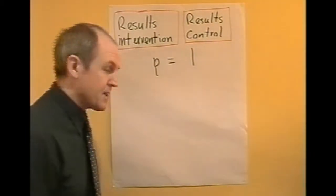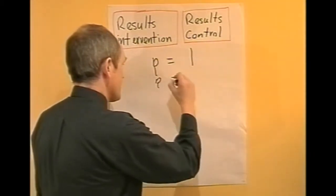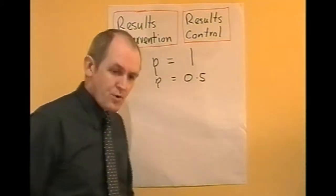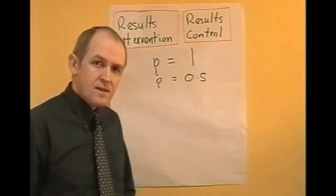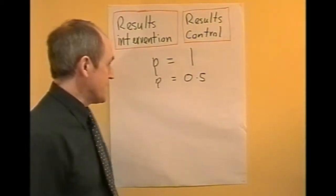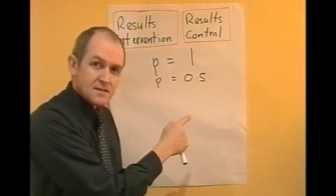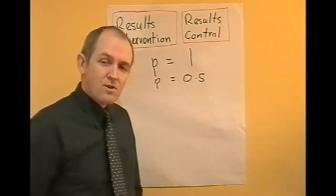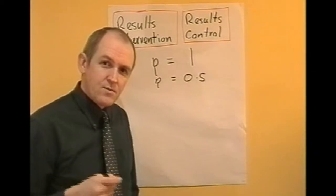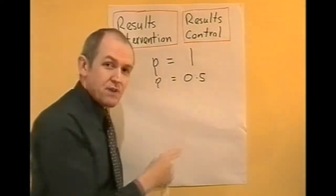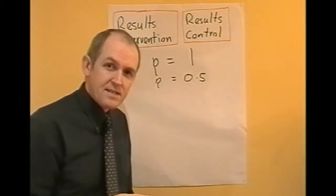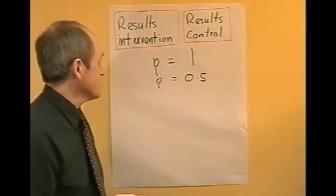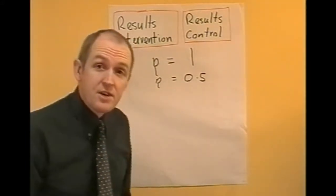Suppose the p-value is found to equal 0.5. Then that means there's a 50% chance that the result arose by chance. In other words, the p-value is describing the probability that the result arose by chance and that it is not a genuine result.